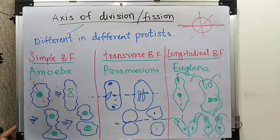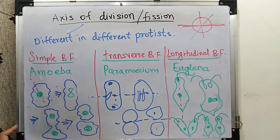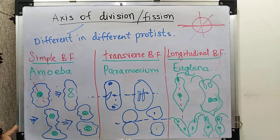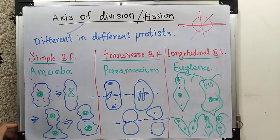So this is binary fission — dividing into two daughter cells that are the same as the parent. In the next class we will learn about multiple fission, which we will cover in the next video.